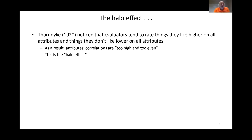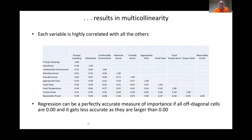So why are these methods bad? In 1920, a researcher named Thorndike noticed that evaluators tend to rate things they like higher on all attributes — the halo effect. His case study involved Air Force pilots: supervisors who liked a pilot rated them high on all attributes, even ones unrelated to flying ability, and disliked pilots got low ratings across the board. In Thorndike's words, the attribute correlations were 'too high and too even.' That human behavior creates a statistical problem called multicollinearity.